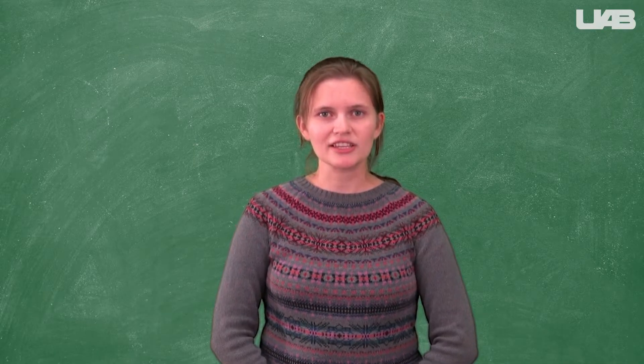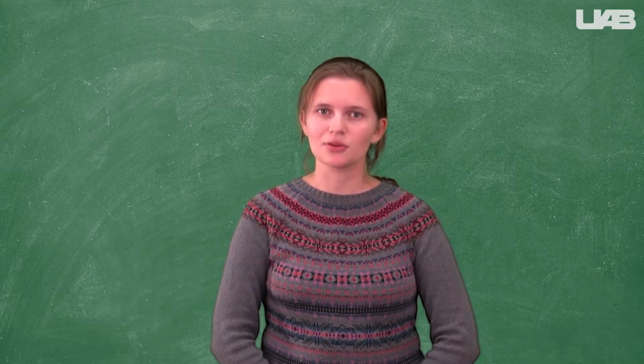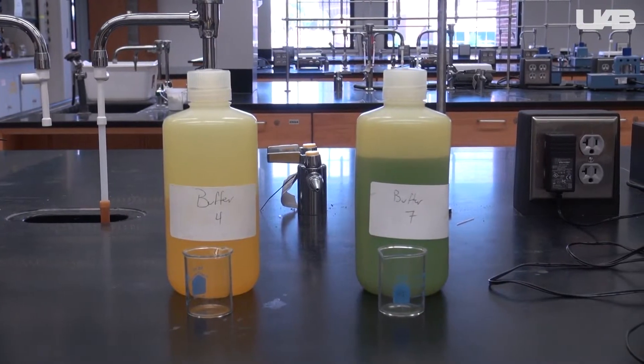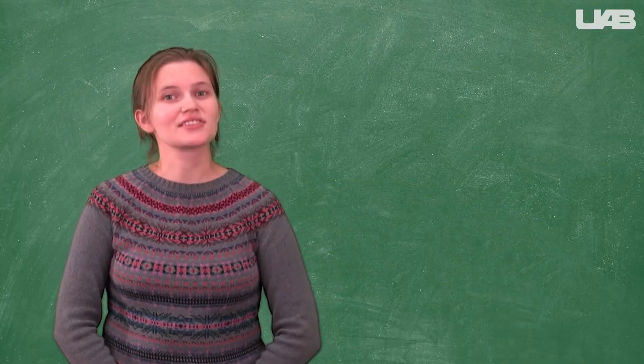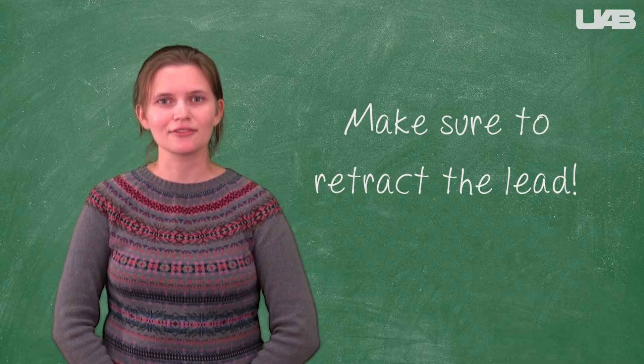Before beginning, get a waste beaker and a wash bottle filled with deionized water from the faucet with the white tap. Get two buffer solutions. In this video, we used a pH 4 and a pH 7 buffer. If your pH meter does not have a stylus, you can use a mechanical pencil that has the lead fully retracted.